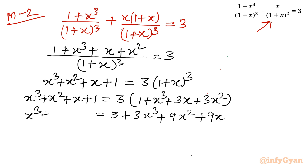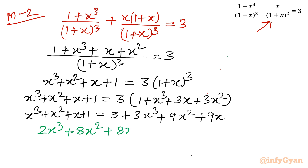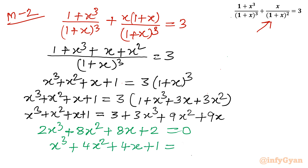The left-hand side is x³ + x² + x + 1. Taking all terms to the right: (3x³ − x³) + (9x² − x²) + (9x − x) + (3 − 1) = 0, giving 2x³ + 8x² + 8x + 2 = 0. Dividing by 2: x³ + 4x² + 4x + 1 = 0.